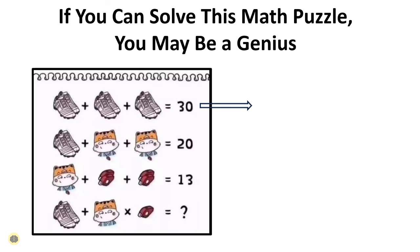For the sake of explanation, we will call the shoes S, the cat C, and the whistle W. The first equation sets up the whole math puzzle. Three pairs of shoes added together equal 30. That is S + S + S = 30. So divide 30 by 3. Each pair of sneakers represents the number 10.